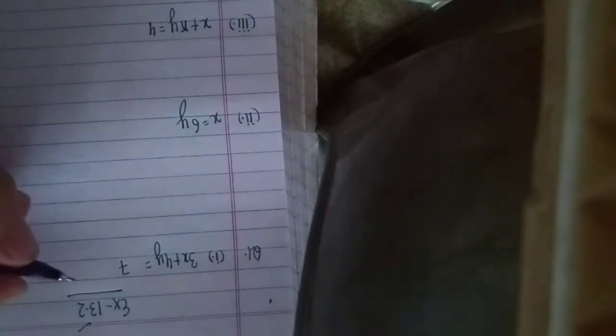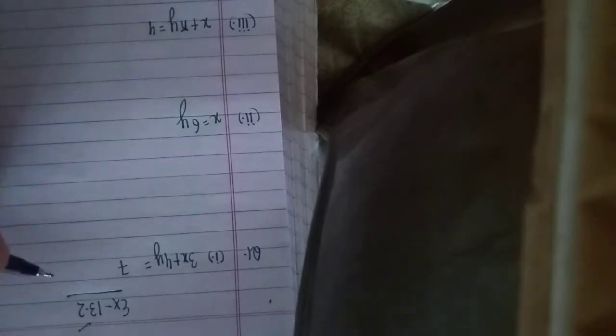Hello everyone, welcome to my channel Study Junction. Today we are going to start with exercise 13.2. So let's start with question 1. In question 1, we have to write 2 equations for each of the following equations.